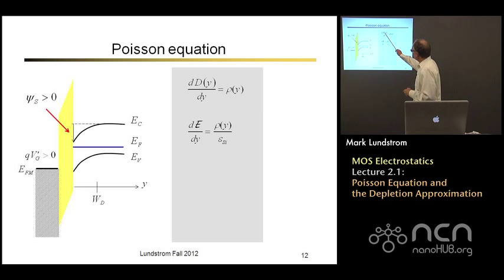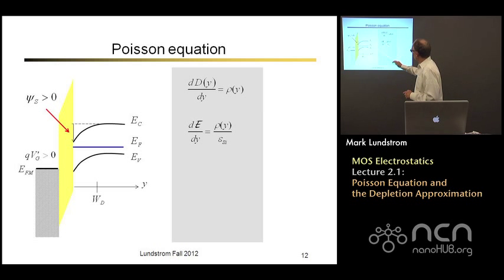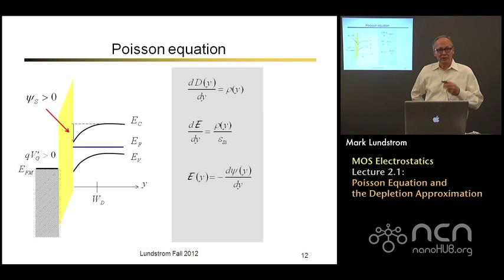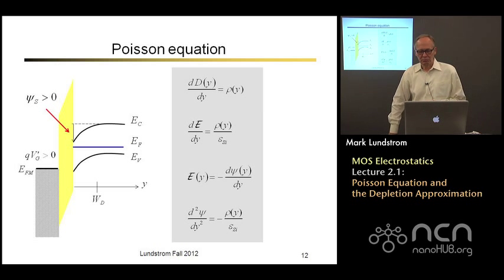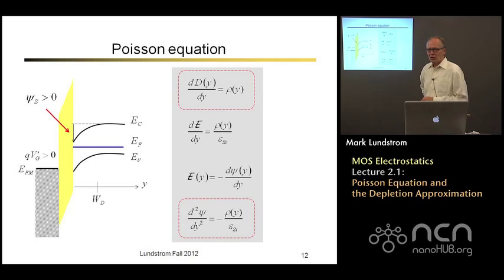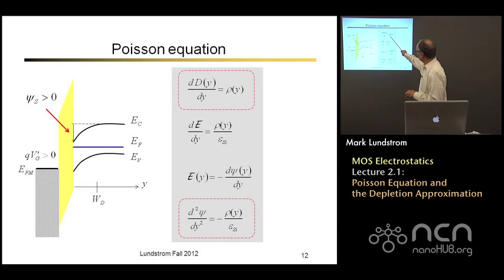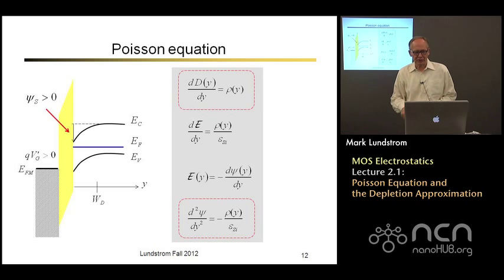Remember that the displacement field is the dielectric constant times the electric field. So I can rewrite the Poisson equation as dE/dy equals charge density over dielectric constant of silicon. Also remember that the definition of electric field is minus the gradient of the electrostatic potential. Putting that together, a second way to remember the Poisson equation is del squared of the electrostatic potential equals minus the charge density divided by the dielectric constant. So when I say Poisson equation in this course, I'm either referring to divergence D equals rho, or the form with the Laplacian of the electrostatic potential.